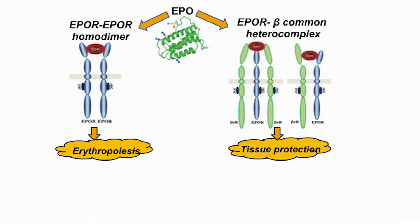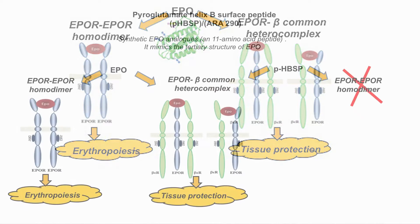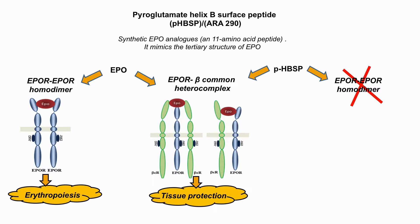Although EPO is tissue protective and prevents ischemic injury of the vascular endothelium, it has side effects due to its erythropoietic activity. This gave rise to the development of EPO analogues, which are tissue protective but are not erythropoietic.